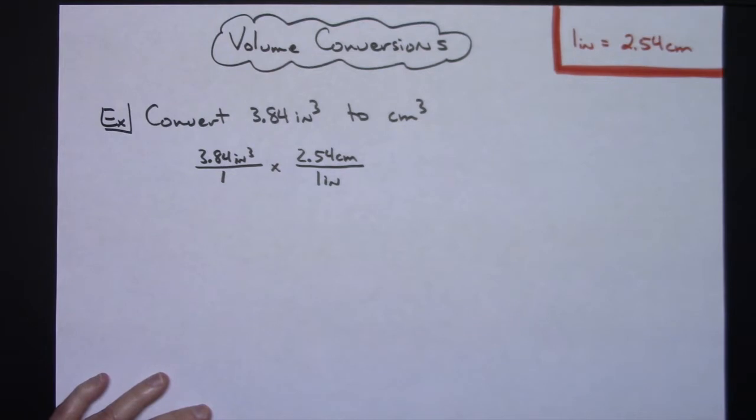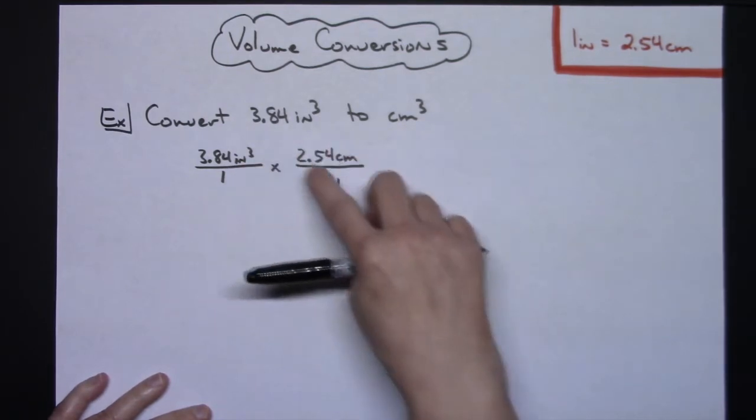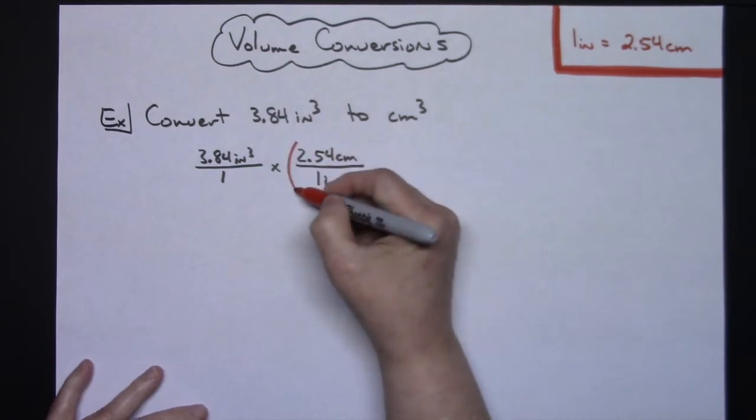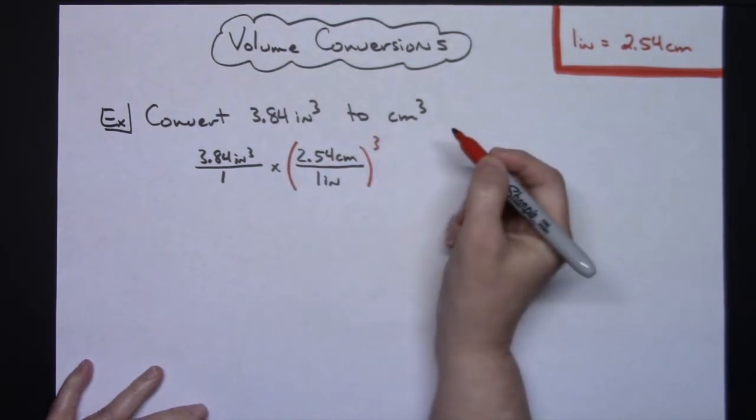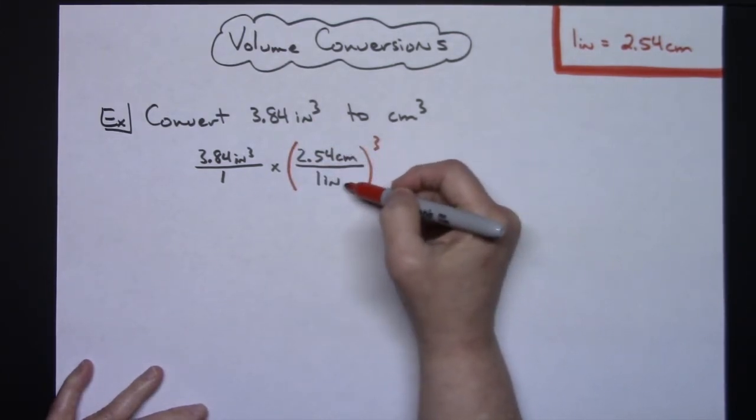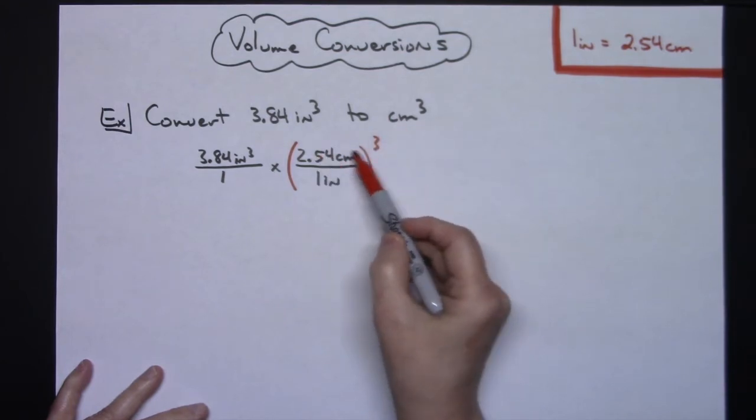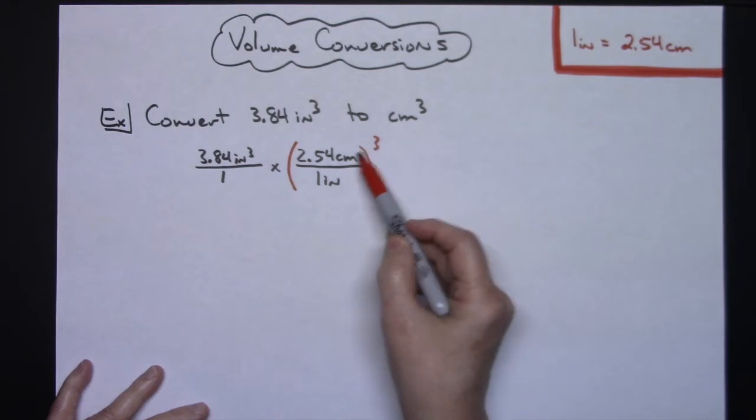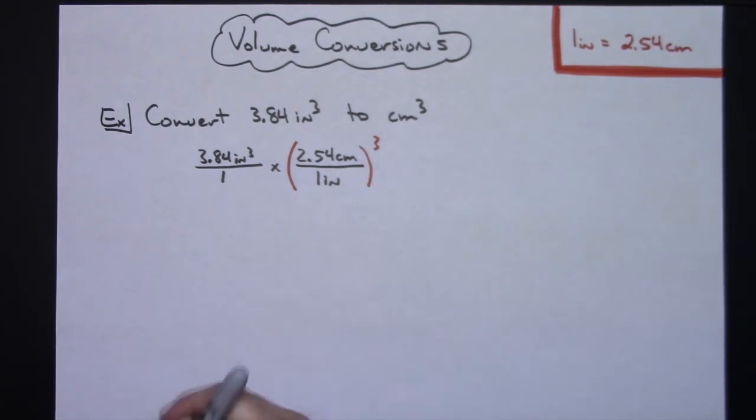All right, now at this point that doesn't do me any good because I cannot cross off cubic inches and inches. However, I can raise this to the third power. Cubing everything, cubing the number, taking my centimeters and cubing it and taking inches and cubing it and one cubing it, and then that's a legal move and I can do that.